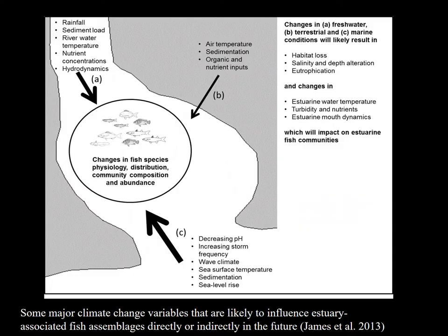In summary, some of the major climate change effects on estuaries in our region will be changes in freshwater, terrestrial and marine conditions, which will likely result in habitat loss, salinity and depth alteration, eutrophication, changes in estuarine water temperatures, turbidity and nutrients, and estuarine mouth dynamics. These will all impact on estuarine fish communities through changes in fish species physiology, distribution, community composition and abundance. Thank you very much.